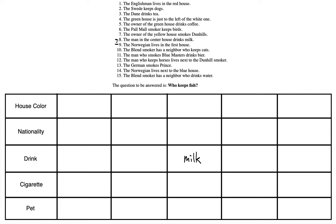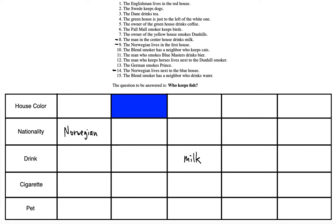The next line says the Norwegian lives in the first house — that's a direct constraint. The Norwegian goes in the first column's nationality cell. Then: 'the Norwegian lives next to the blue house.' Since the Norwegian is in the first house, the only neighbor is to his right, so that second house must be the blue house. We mark it blue and cross off that clue.